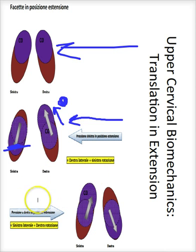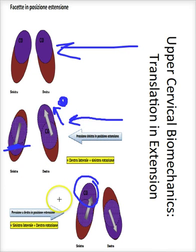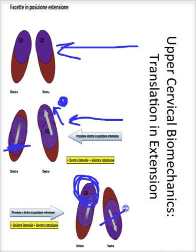If we wish to treat the left condyle to move it anteriorly on the C1 facet, then we would simply place the joints both in extension and introduce a left to right translation — a right translation — which would produce a left side bending and a right rotation. But again, because the joints are positioned in extension to begin with, we'll maximize the anterior movement of the left anterior facet while bringing the right one simply closer to the neutral position.